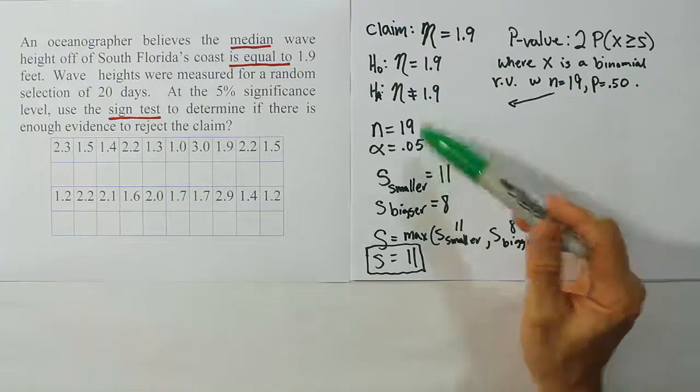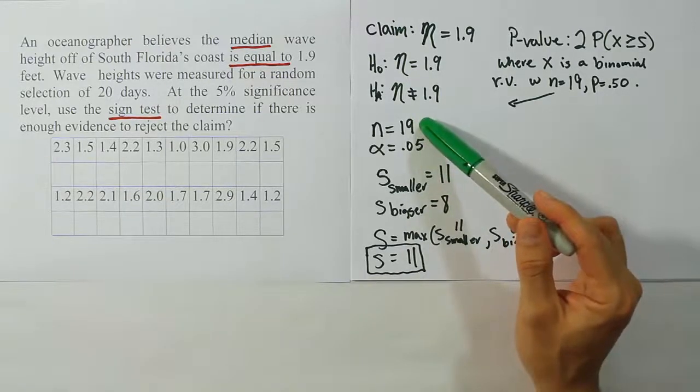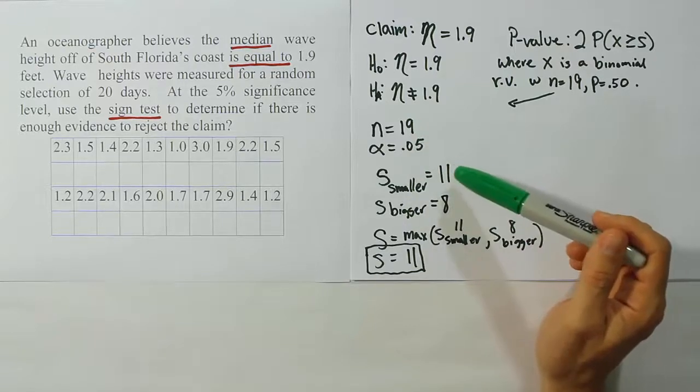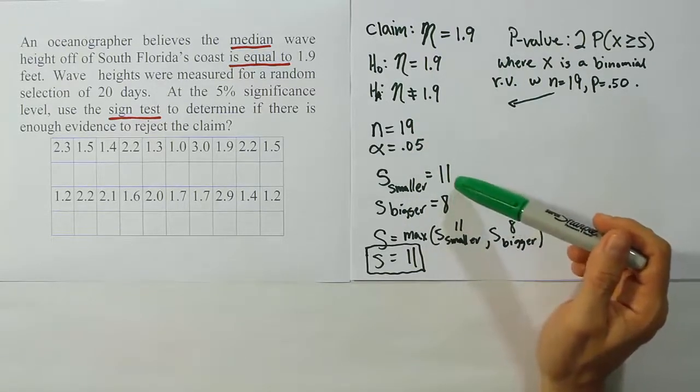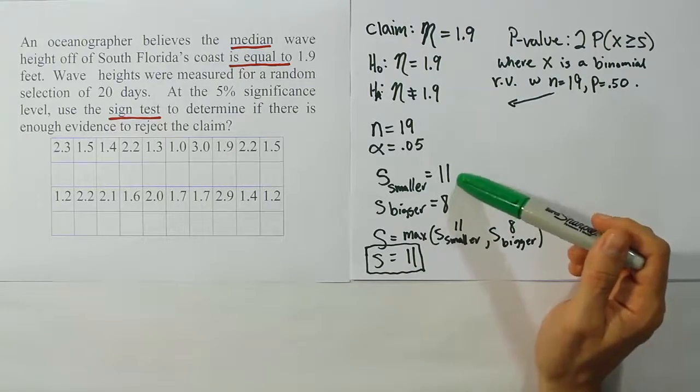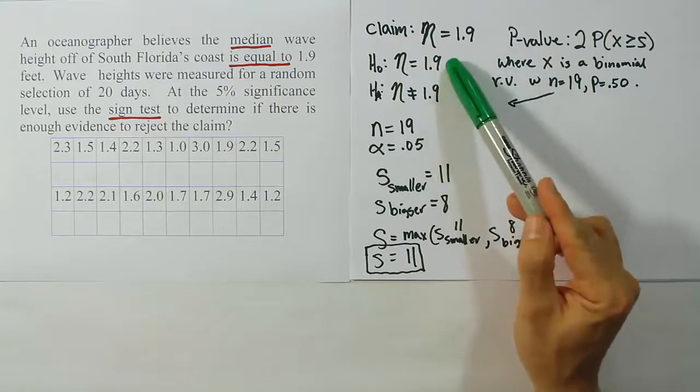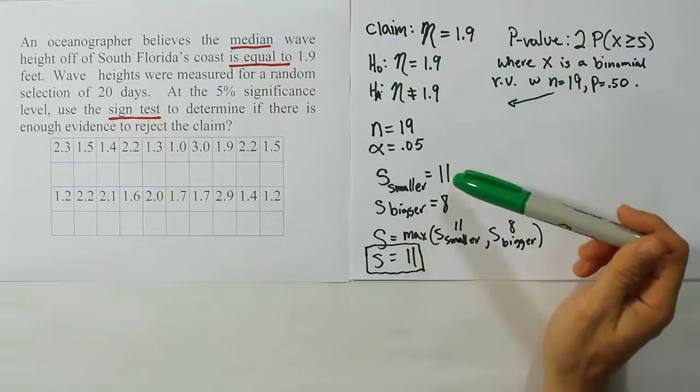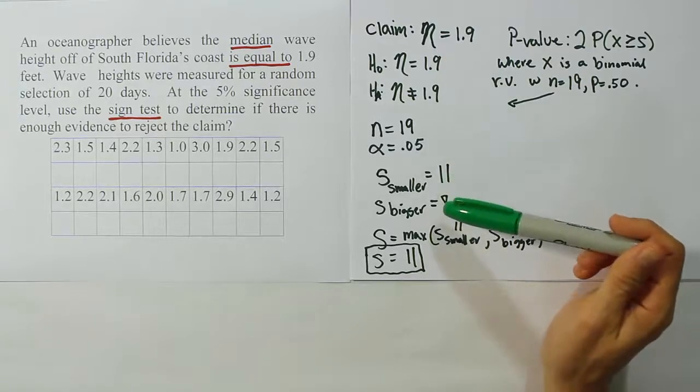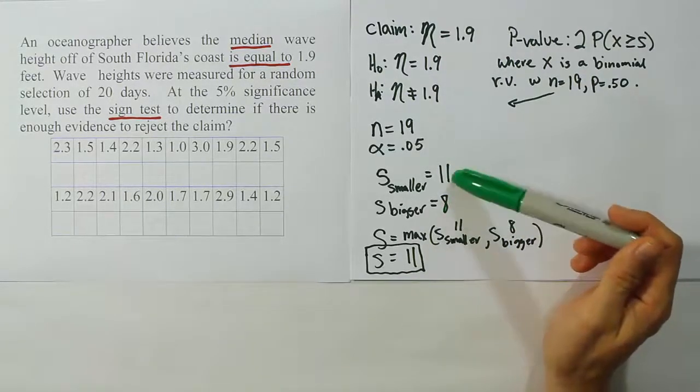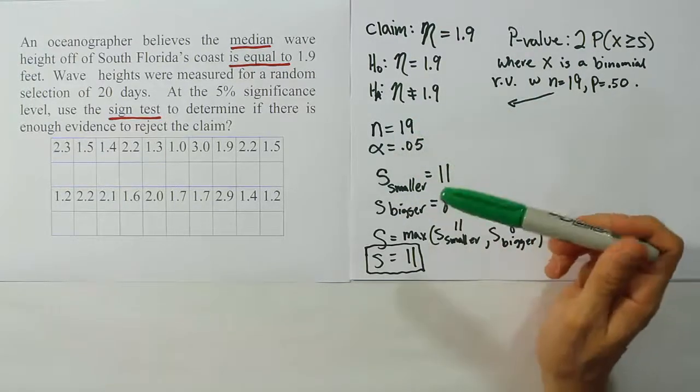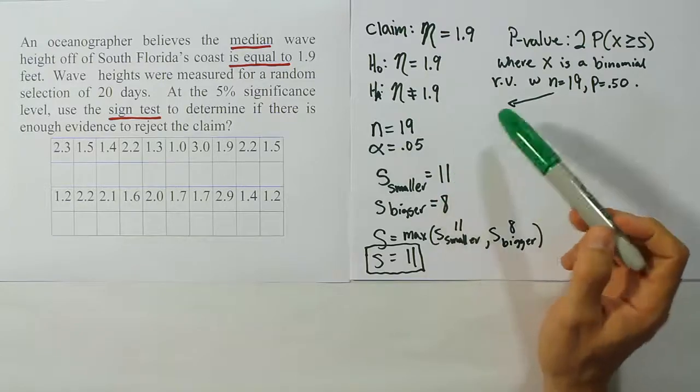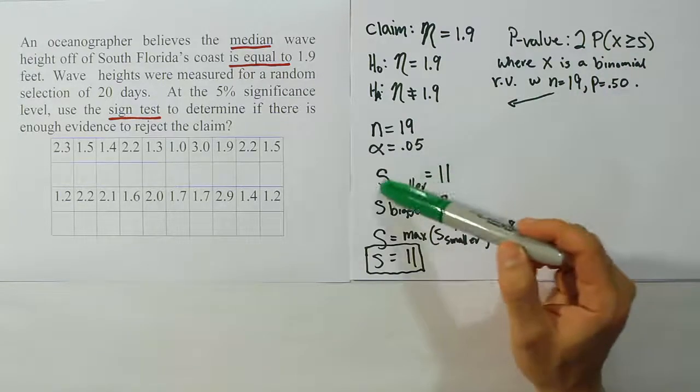In other words, half the values must be below the median, half the values must be above the median. So if this really is the median, that means when I grab a sample of 20 values, I should expect typically about half of them to be below and about half of them to be above. Of course, that's in the perfect scenario where things always work out exactly as planned. In reality, we know there will be some variation. Things won't always go exactly like that. So in a random sample of 19 values, I might get 11 and 8, that sort of scenario.